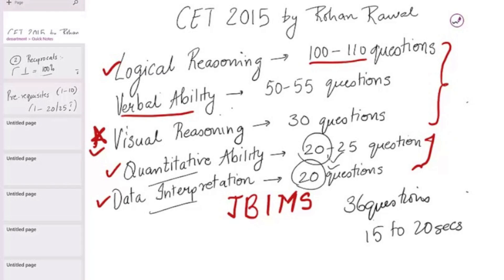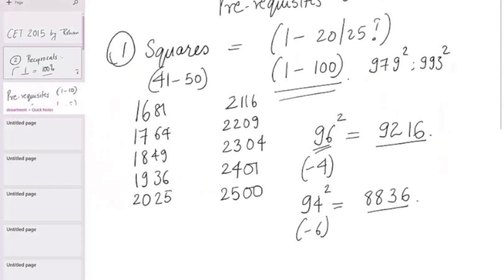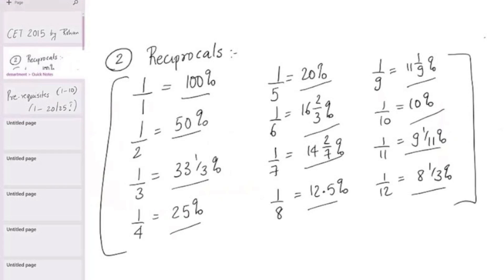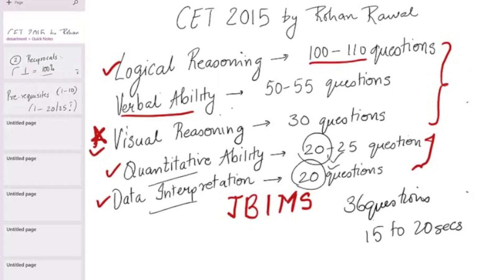So, this was about it. This is about CET 2015 by Rohan Raval. This was about what kind of sections do you have in CET? How many marks per section? And the two prerequisites, squares and reciprocals. In our next video, I'll be showing you how do you solve questions on DI, quant and visual reasoning, these three areas in the time that I promised 15 to 20 seconds per question. Also, how do you strategize your attempts for JBIMS? How do you reach this golden number 200 attempt in CET? Thank you very much. It was great talking to you all.